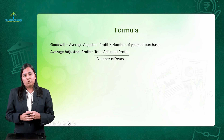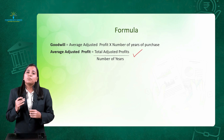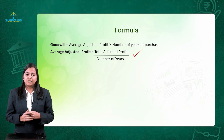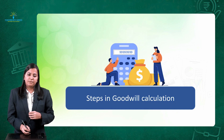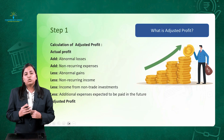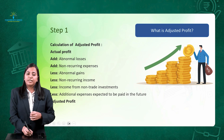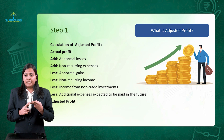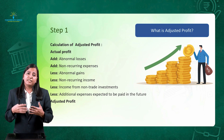Average adjusted profit is calculated by the formula: total adjusted profit divided by number of years. To calculate adjusted profit, we start with the actual net profit from the profit and loss statement. To it, we add all kinds of abnormal losses and any non-recurring expenses. Non-recurring expenses are expenses which will not happen again and again in the future.